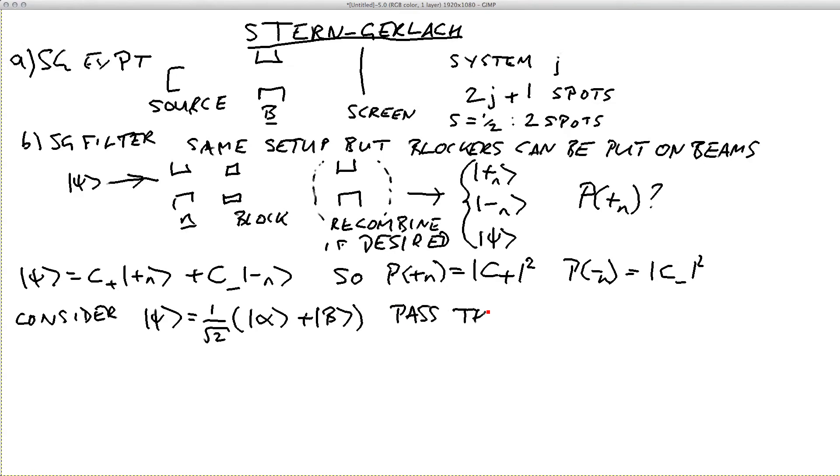We're going to pass this through a Stern-Gerlach filter with plus x open, and we could ask what happens there, what's the probability of each electron passing through.